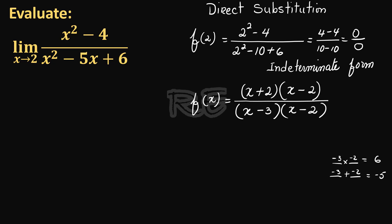Now x is approaching 2 but not quite 2, therefore x is different from 2. We can cancel x minus 2 over x minus 2 which is 1, and the fraction in reduced form is x plus 2 over x minus 3.